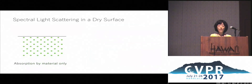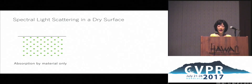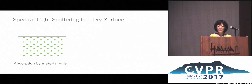Let us start with the spectral appearance of a dry surface without water. Surfaces consist of particles interwoven with air that cause scattering and absorption every time a light ray hits them. These radiometric events determine the spectrum of light as it travels through the surface back into the air.